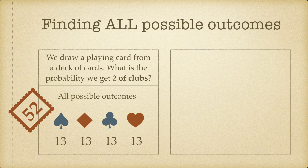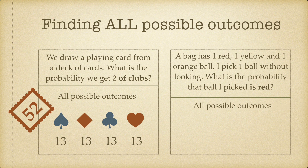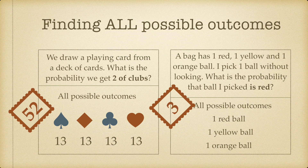Let's take a look at one final example. We have a bag with one red, one yellow, and one orange ball. I pick a ball without looking at it. What is the probability that the ball I picked is red? What are all possible outcomes? I can pick the red ball, the yellow ball, or the orange ball. So there are a total of three possible outcomes for this example.